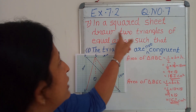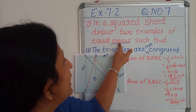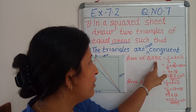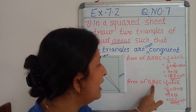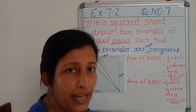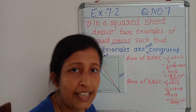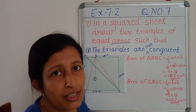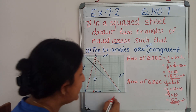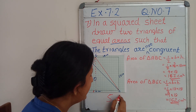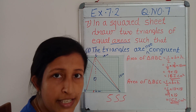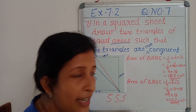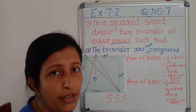So one part is over. We had shown that these two triangles have equal areas. We got the area of triangle ABC and triangle BEC are equal. Next, we are going to check that these two triangles are congruent or not. First, we can check: can we apply SSS criteria? We cannot apply SSS criteria because the sides have different values.